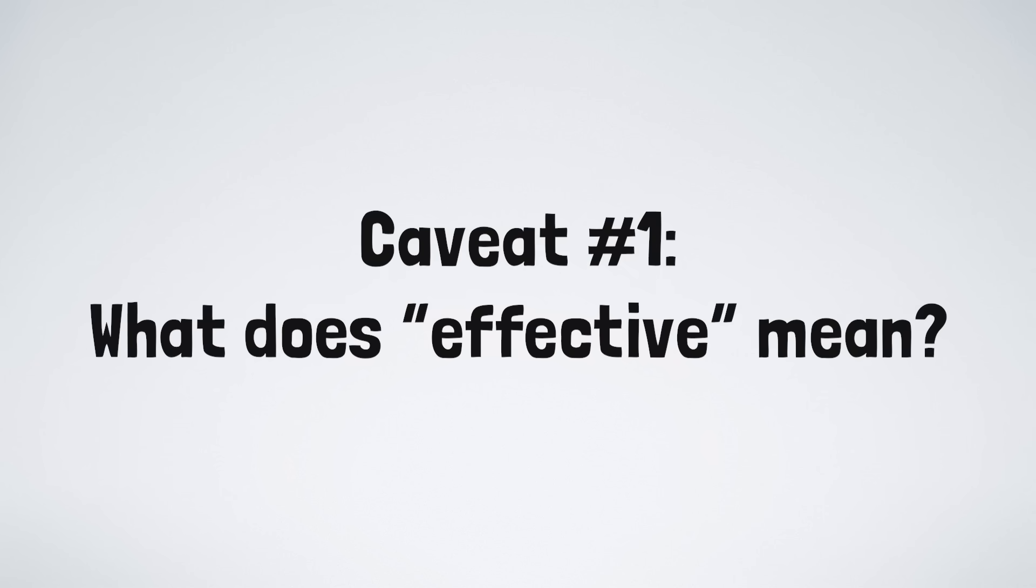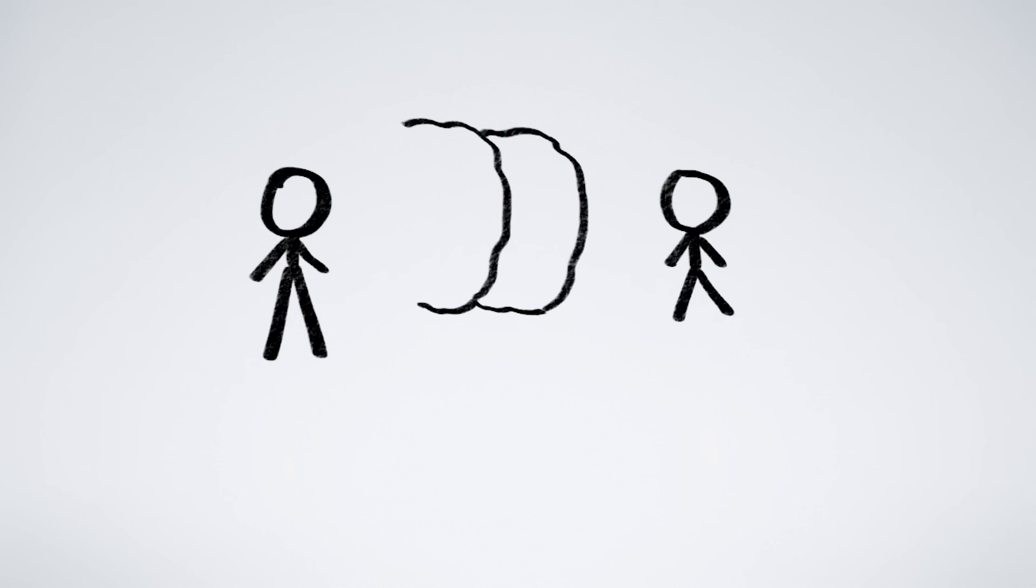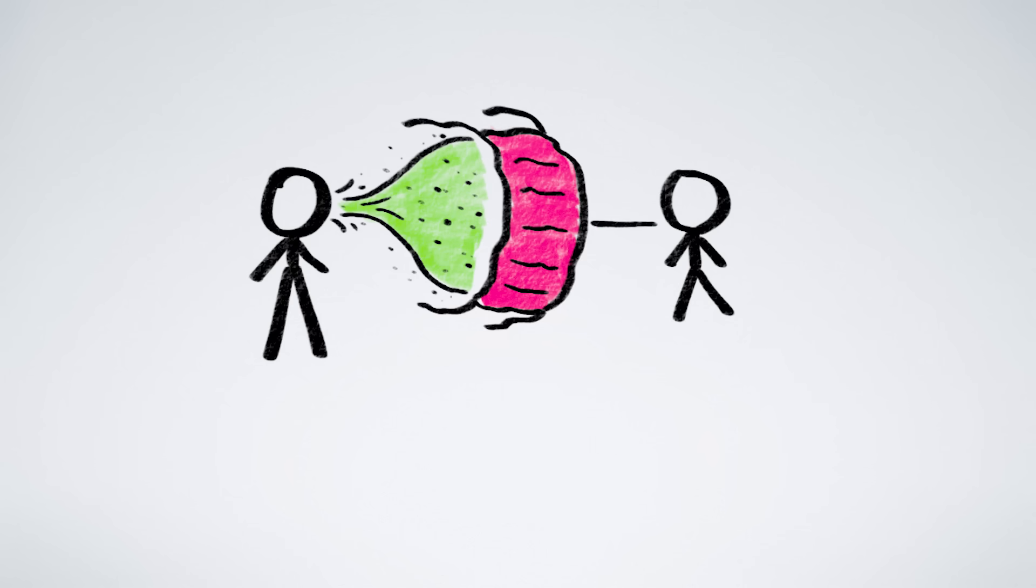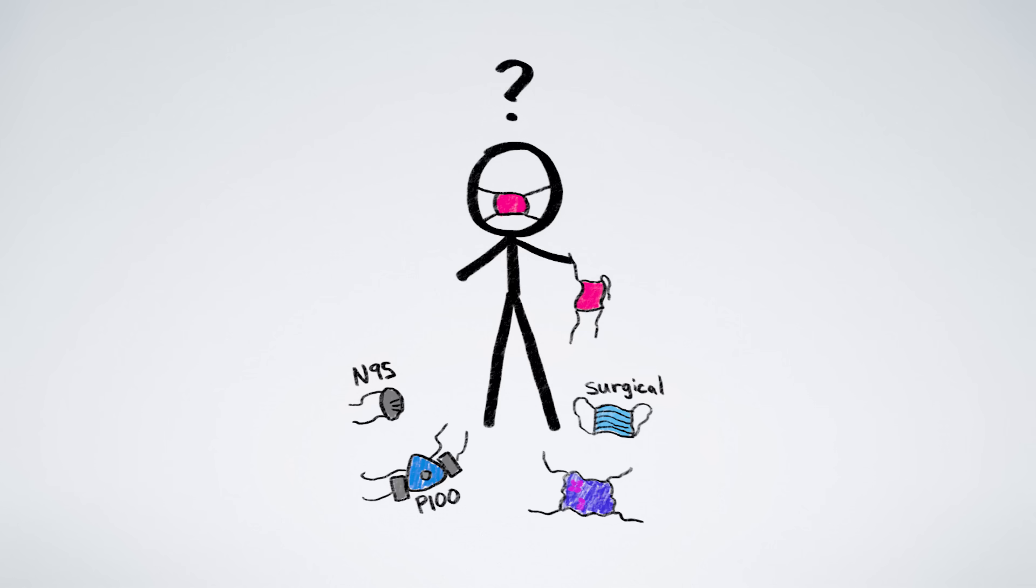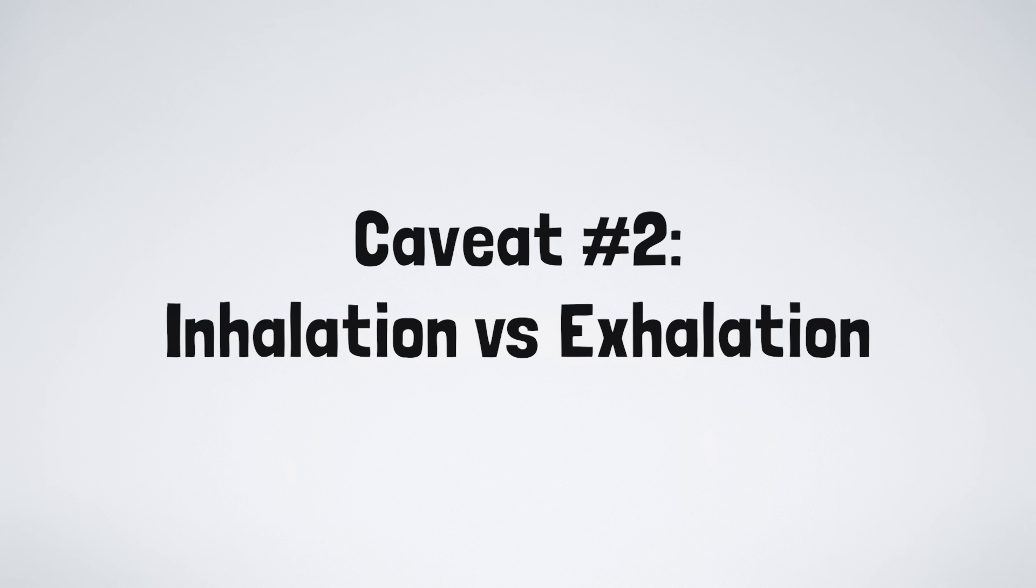Okay, some caveats to all this. We've been pretty vague about what it actually means for a mask to be x% effective. For the purposes of the math in this video, all that matters is that disease transmission drops by x%, irrespective of how the mask actually achieves this drop. In reality, masks reduce disease transmission through a combination of filtering and redirecting air and other means, and they vary a lot in effectiveness depending on their filtration, how tightly they fit, if they have an exhalation valve, etc. So it's hard to give exact numbers. A 50% effective mask could be something like an N95 worn poorly, or a cloth mask worn well. We've assumed that masks provide equivalent protection upon inhalation and exhalation.